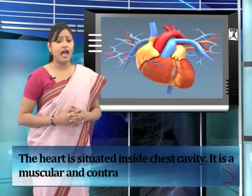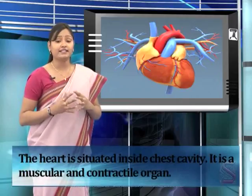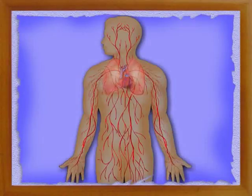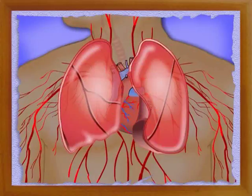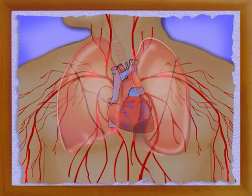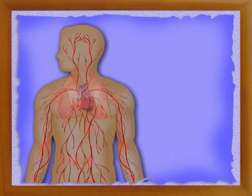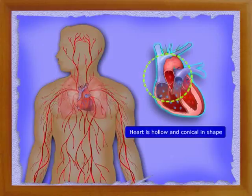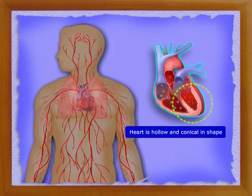It is a muscular and contractile organ. The contractions help the heart to pump the blood to various parts of the body. The heart is placed between the two lungs and above the diaphragm. It is hollow and conical in shape. The base or the broad portion is upwards and the apex or narrow portion is pointed downwards.